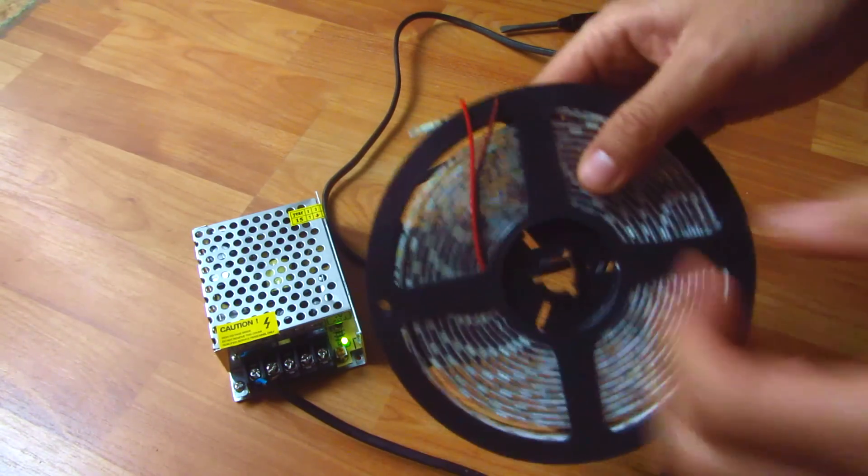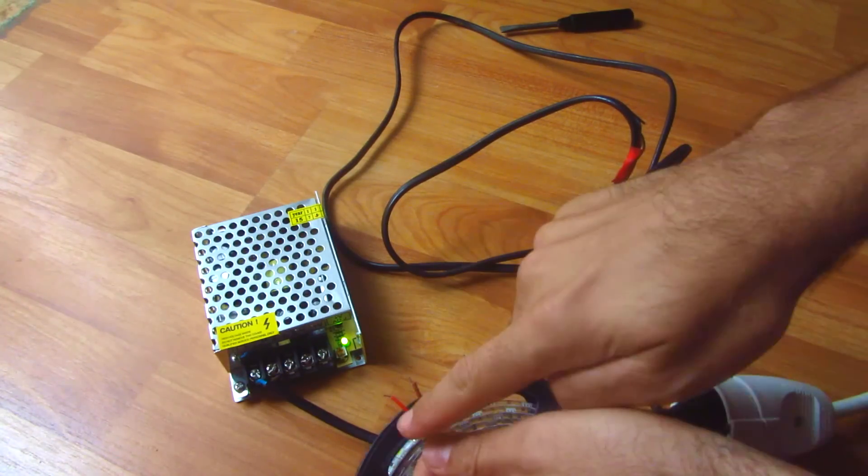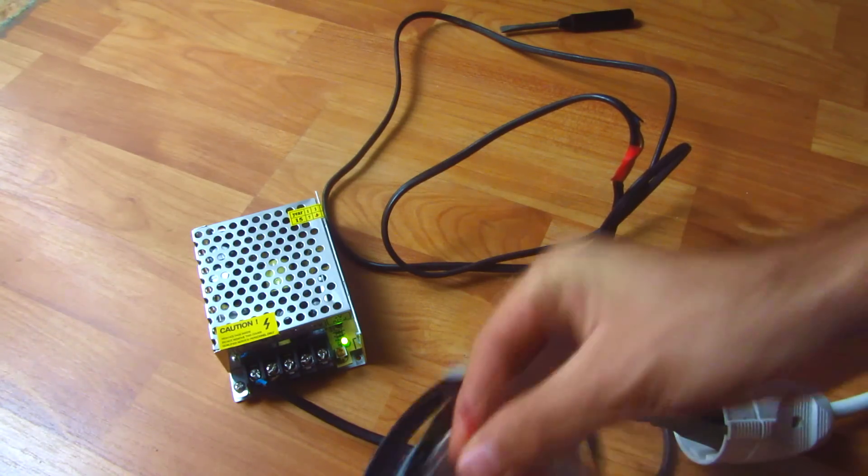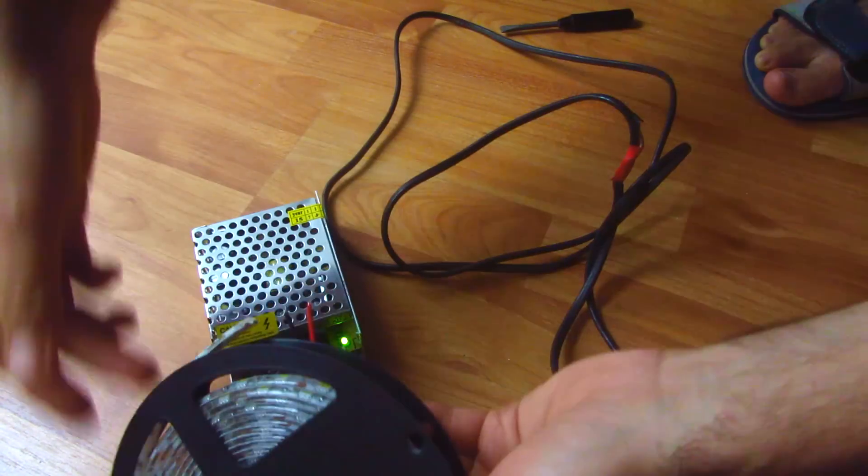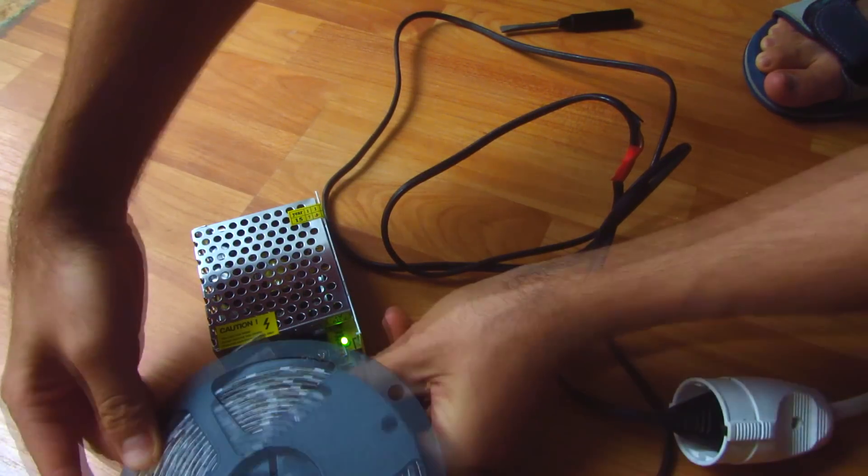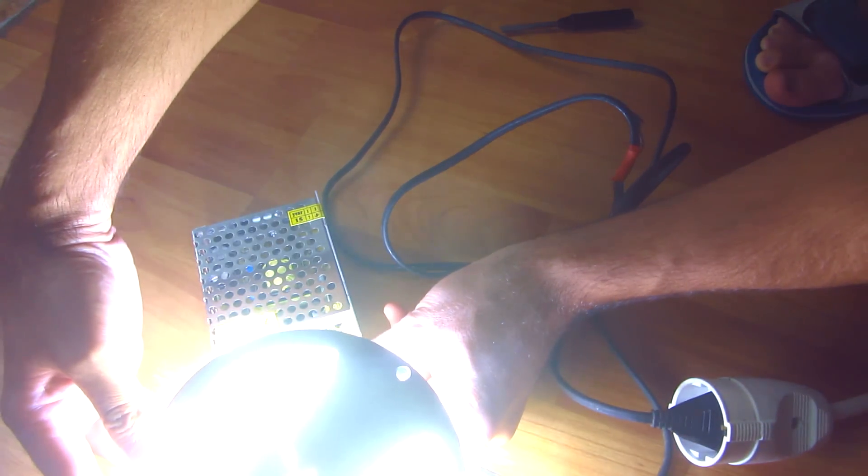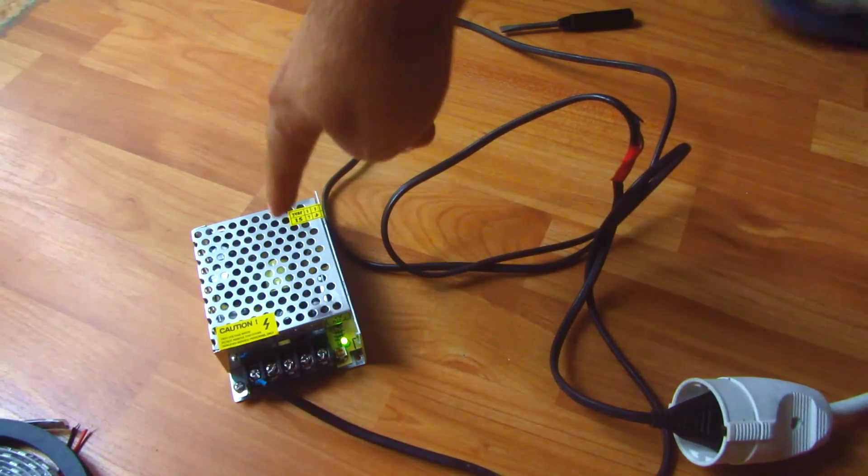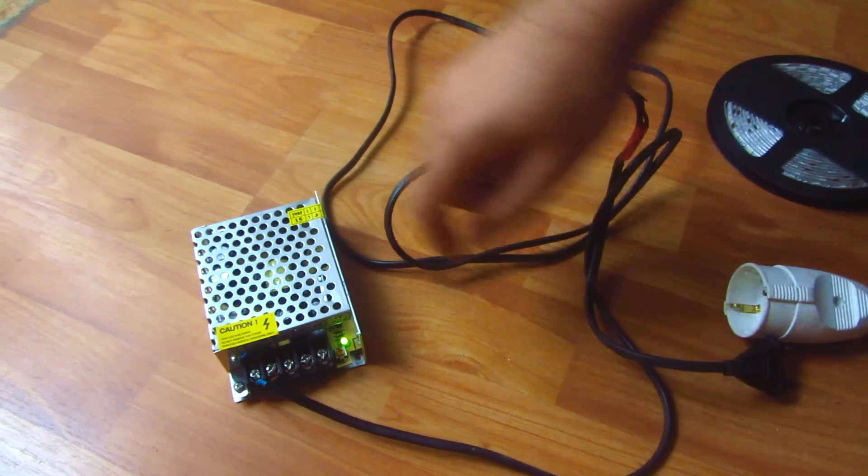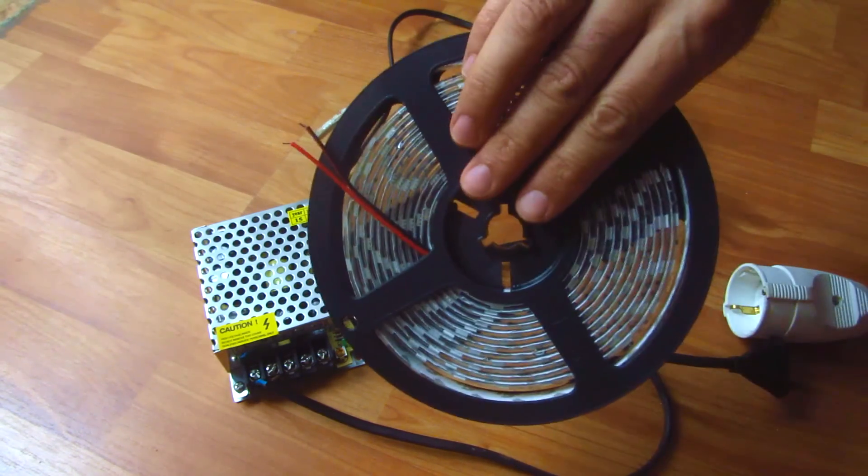This is an LED strip. The red is the plus and black is the minus. Let me connect it to the right side without touching anything else. Voila, it's working! So the LED transformer is okay. That's how to test an LED driver designed to power these things.